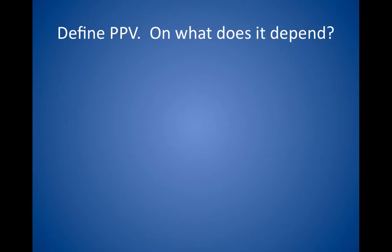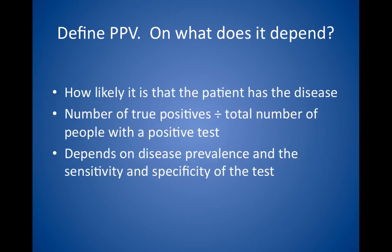Define positive predictive value, or PPV. On what does it depend? When a test is positive for disease, the positive predictive value measures how likely it is that the patient has the disease — the probability of having a condition given a positive test. PPV is calculated mathematically by dividing the number of true positive results by the total number of people with a positive test. PPV depends on the prevalence of a disease: the higher the prevalence, the higher the PPV, and it also depends on the sensitivity and specificity of the test. For example, an overly sensitive test that gives more false positive results has a lower PPV.